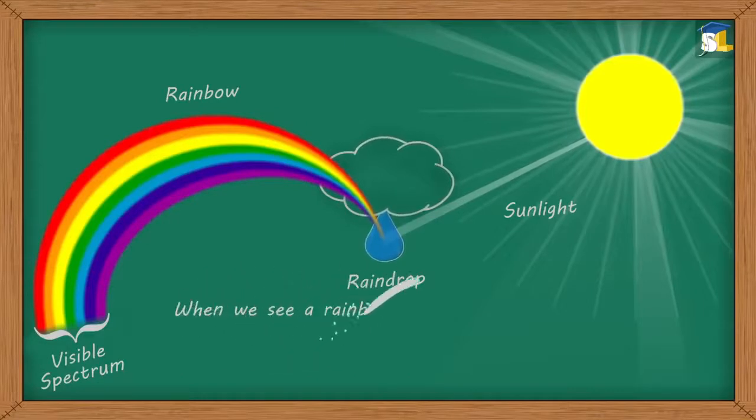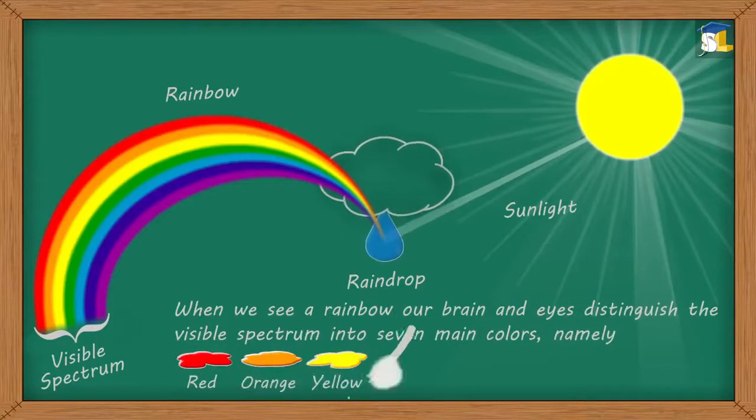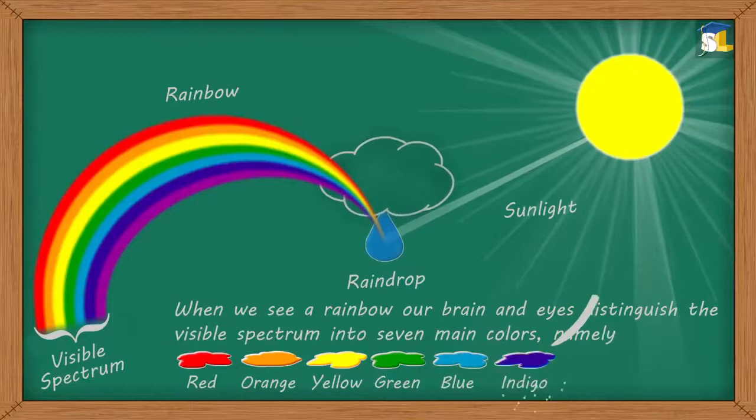When we see a rainbow, our brain and eyes distinguish the visible spectrum into seven main colors: red, orange, yellow, green, blue, indigo, and violet.